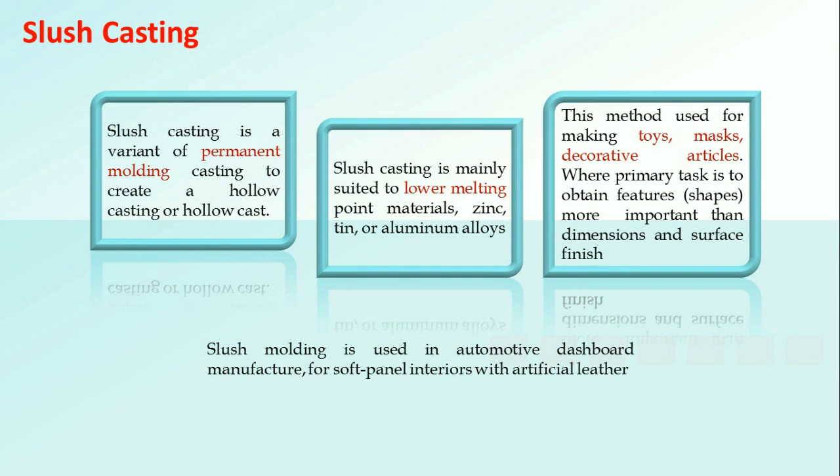Nowadays, the slush casting process is used to prepare automotive dashboards and soft panel interiors using artificial leathers. Slush casting makes use of low melting materials such as zinc, tin, and aluminum alloys.